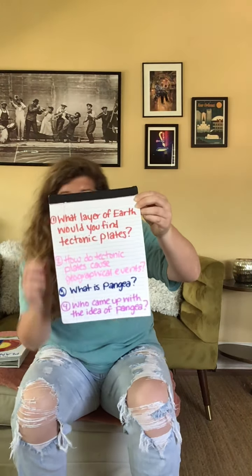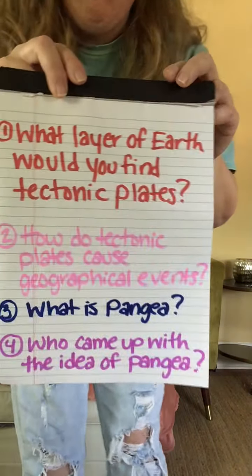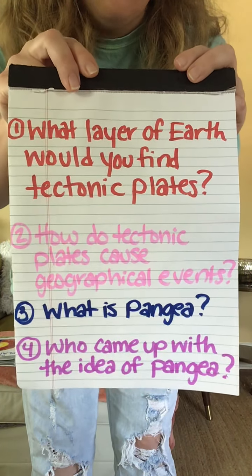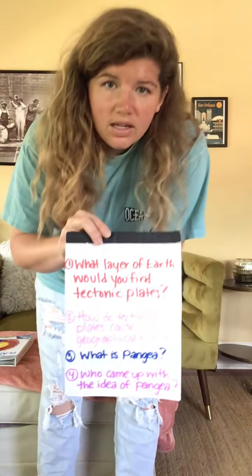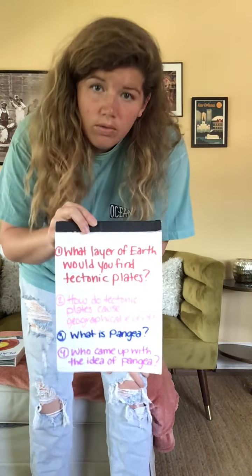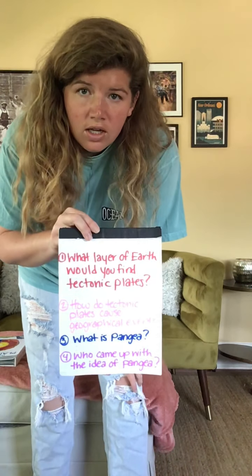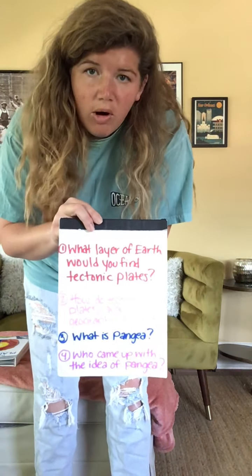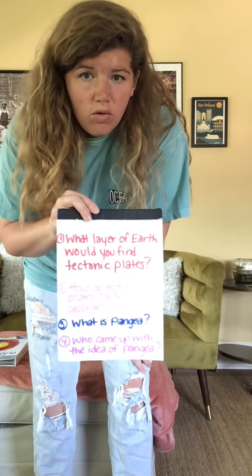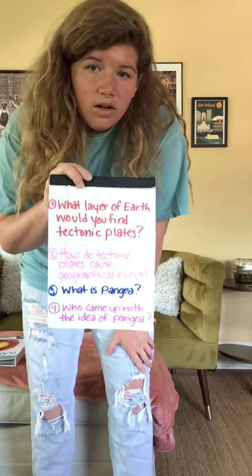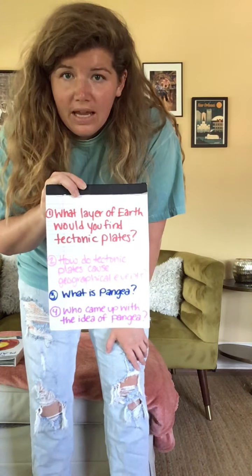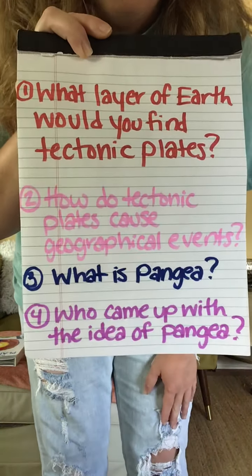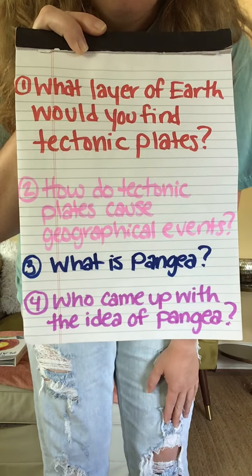The first question says: what layer of Earth would you find tectonic plates? If y'all remember from last week, you learned there were three major layers of Earth — the crust, which is the outer part; the mantle, which is the thick inner part; and the core, made up of the outer and inner core. You're going to tell me which one or two of those layers you would find tectonic plates.